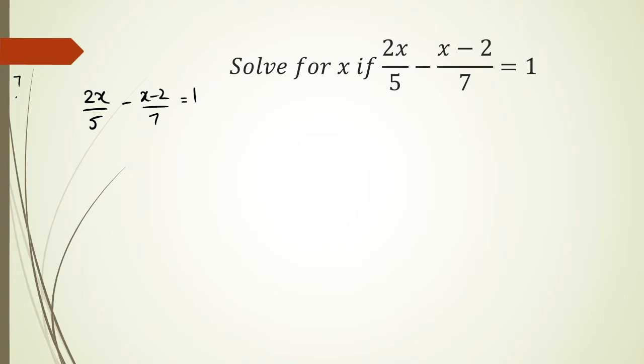Now I know that between 7 and 5, the lowest common multiple is going to be 35. So therefore, the first fraction, I've got to multiply the denominator by 7 and the numerator by 7. And for the second fraction, I've got to multiply the denominator by 5 and the numerator by 5.